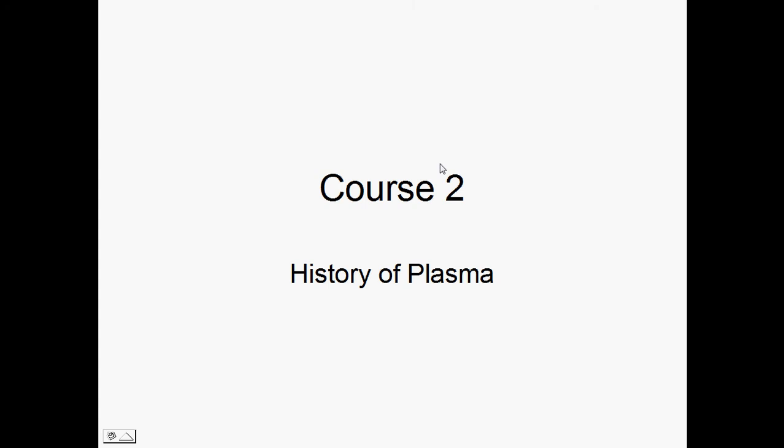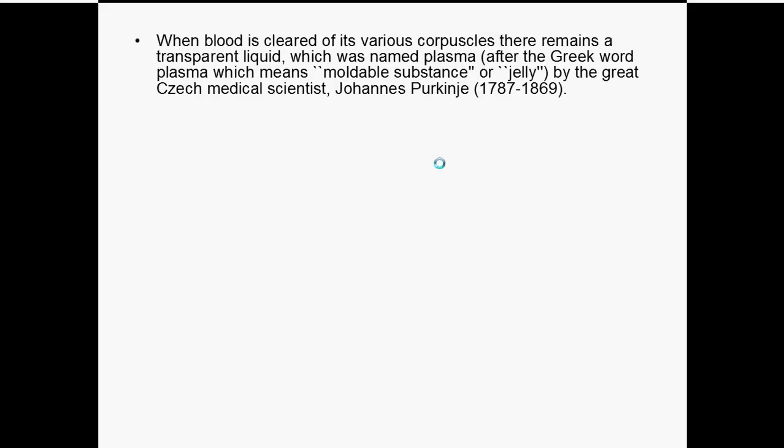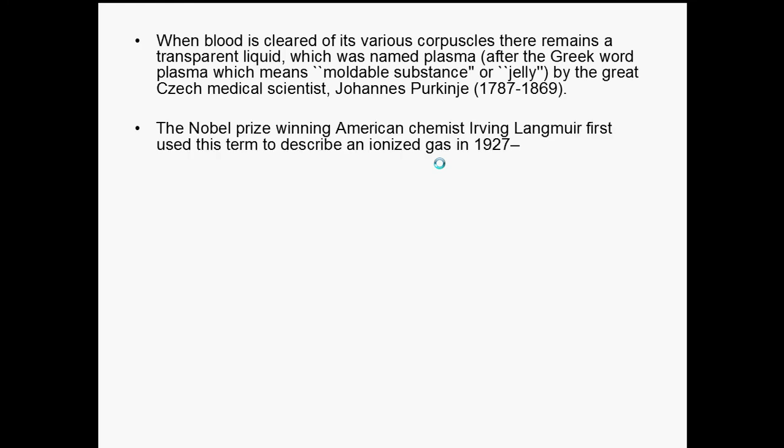I'd like to introduce you to the second course in basic plasma physics. This time we're going to talk about the history of plasma. When blood is cleared of the red corpuscles, the remains a transparent liquid, and this was called plasma after the Greek word which means a moldable or jelly-like substance, by the Czech medical scientist Johannes Purkyně. The Nobel Prize-winning American chemist Irving Langmuir first used this term to describe an ionized gas in 1927.